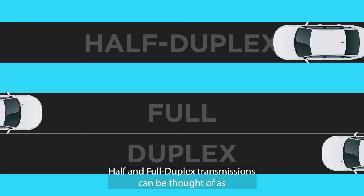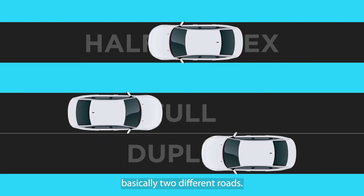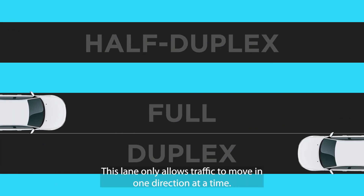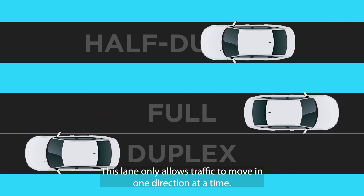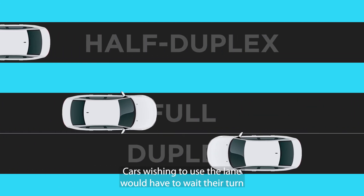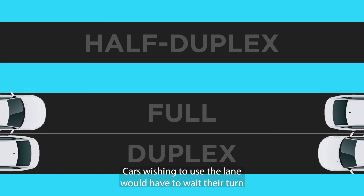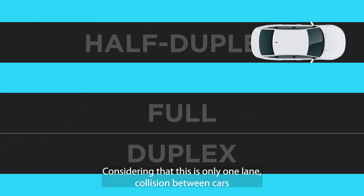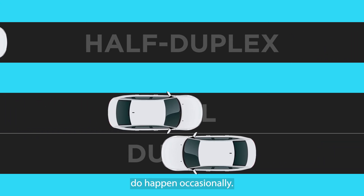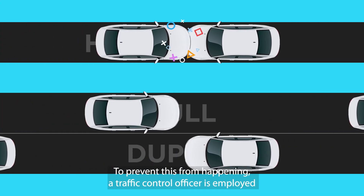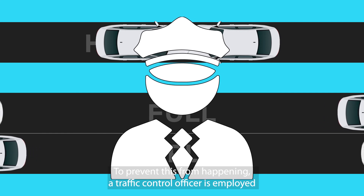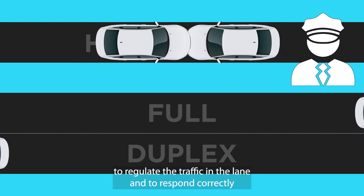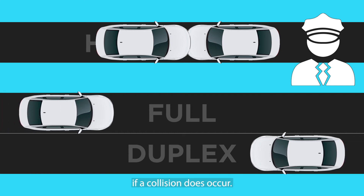Half and full duplex transmissions can be thought of as basically two different roads. With half duplex, cars share a single lane. This lane can only allow traffic to move in one direction at a time. Cars wishing to use the lane would have to wait their turn in order to get to their destination. Considering this is only a one-lane road, collisions between cars do happen occasionally, and to prevent this, a traffic control officer is employed to regulate the traffic in the lane and to respond correctly if a collision does occur.